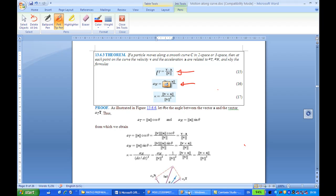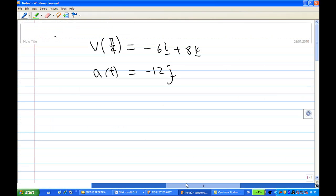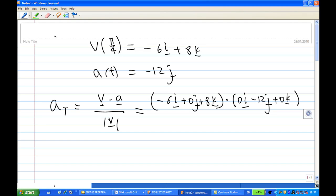So we are going to use this to find At and An now. To find At, At is v dot a over length of v. Now we have found earlier, v is minus 6i plus 8k, and A is 0i minus 12j plus 0k.